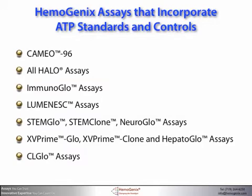This slide shows you the ATP bioluminescence assays that incorporate ATP standards and controls. They include the Cameo 96 and all of the HALO assays for hematopoietic cells, Immunoglow assays for immune cells, and luminescence assays for mesenchymal stem cells. Stemglow, Stemclone, and Neuroglow assays cover primary stem cells and stem cell lines. Xv'glow, Xv'clone, and Hepatoglow assays cover ex vivo primary explanted cells, and the CL-Glow assays for cell lines and tumour cells.